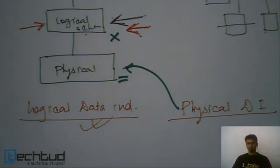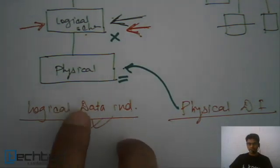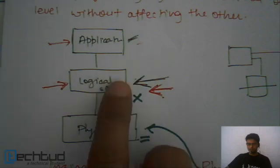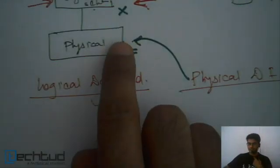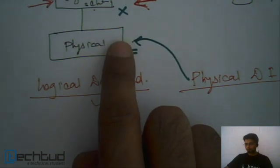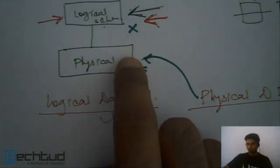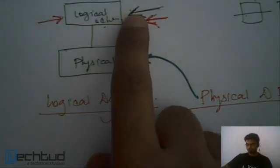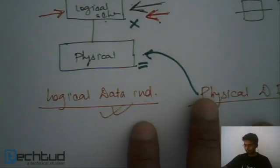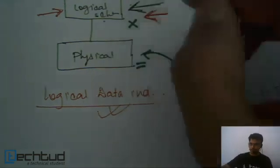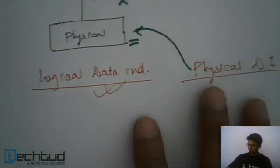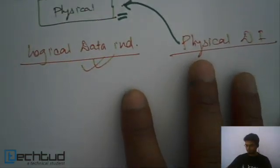This is all about data independence. We studied two kinds of data independence in our database system: the first is logical data independence and the other is physical data independence. In logical data independence we change the logical schema without affecting the application program, whereas in physical data independence we change the physical schema without affecting the logical schema. In both cases, the higher level of schema remains unaffected.